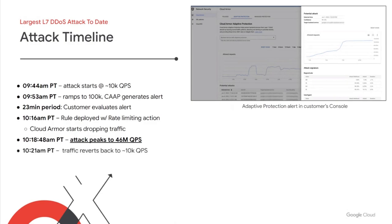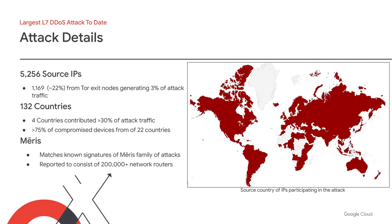Over the next half hour, the attack ramped down, ultimately concluding at 10:54 a.m., only 70 minutes after it started. Our research showed that over 5,200 source IPs, all representing compromised devices, participated in the attack. More than a fifth of the source IPs are associated with Tor exit nodes, which contributed roughly 3% of the total attack request volume. That 3% from Tor corresponds to well over 1.3 million requests per second, which on its own could probably take down all but the largest web apps. The attack was distributed globally, with source IPs originating from 132 countries, and four countries were the source of over 30% of the attack traffic. More than 75% of the compromised devices came from just 22 of the 132 countries.